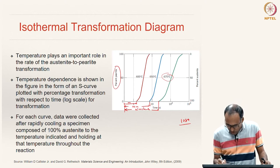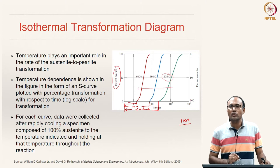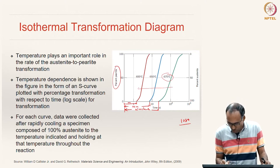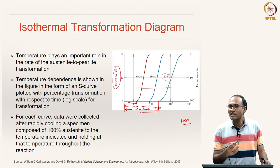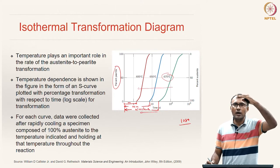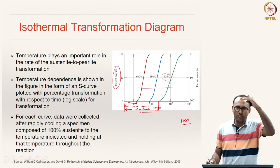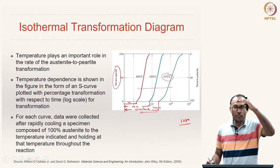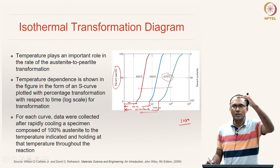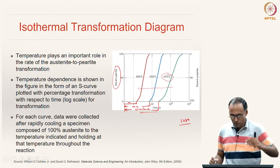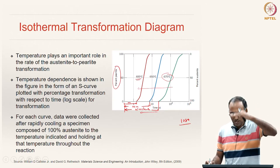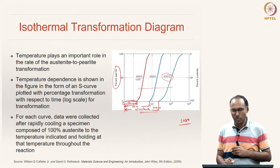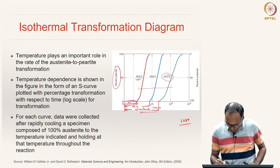As you reduce the temperature at which the phase transformation occurs, the nucleation time also reduces. If you are further away from the critical transformation temperature, the degree of undercooling is larger. With higher degree of undercooling — further from 760°C — nucleation happens more readily and quickly, followed by growth.